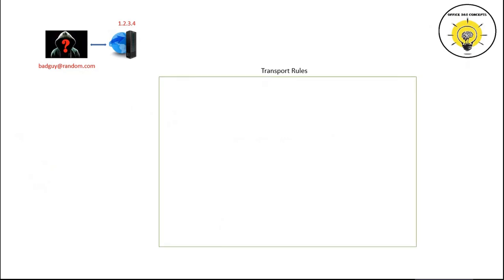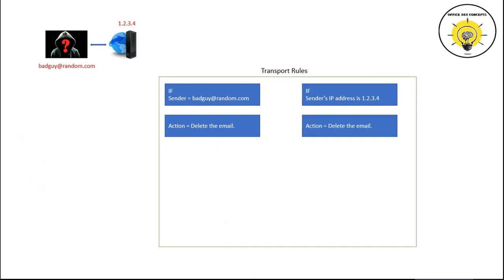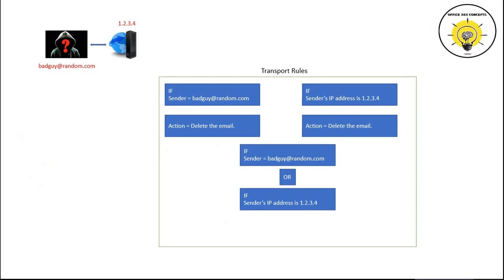To achieve this, we will create a mail flow rule. We can create a transport rule based on the sender's email address or on the connecting IP address, which is the IP address of the email server. We will define a condition: if sender's email address is badguy@random.com, the action will be to delete the email. To create a rule based on connecting IP address, we set a condition such that if the sender's IP address is within range 1.2.3.4, delete the email. Using an OR operator, if the email address or IP address matches the conditions, the action will be taken.